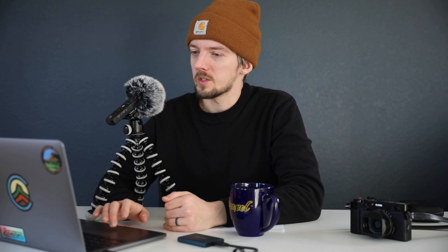The fifth photo was taken in Garden of the Gods a few days after we first moved to Colorado, and I think they all actually look pretty good here — it just depends on what you prefer. Astia is always pretty pleasing, kind of middle of the road. Classic Neg is way more contrasty so you can hardly see the ground at all. This was probably edited from a raw file originally and I was likely using Classic Chrome in camera when I shot it. Velvia kind of ruins my wife's skin tones here — there's maybe a little too much yellow — and Astia probably looks the most pleasing and natural.